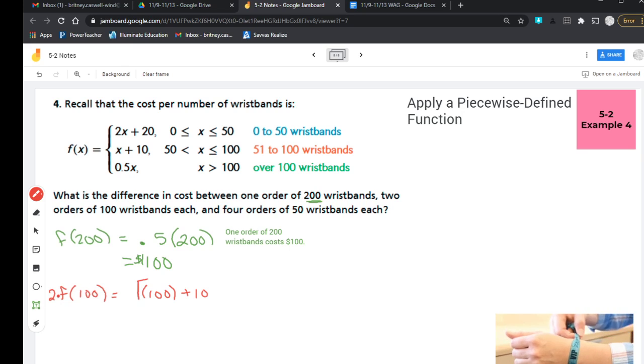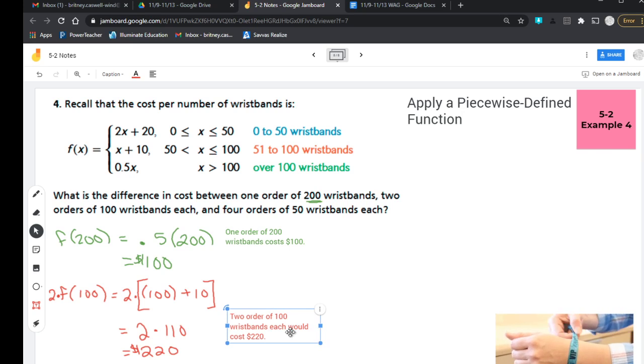So let's start with the f(100). So the f(100) is 100 plus 10. And then of course, if I'm multiplying that by the two, I'd put a two here. So 100 plus 10 is 110. So I'm looking at two times 110, which is $220. So if I go to write a little note to myself here, I'm going to say two orders of 100 wristbands each would cost $220.